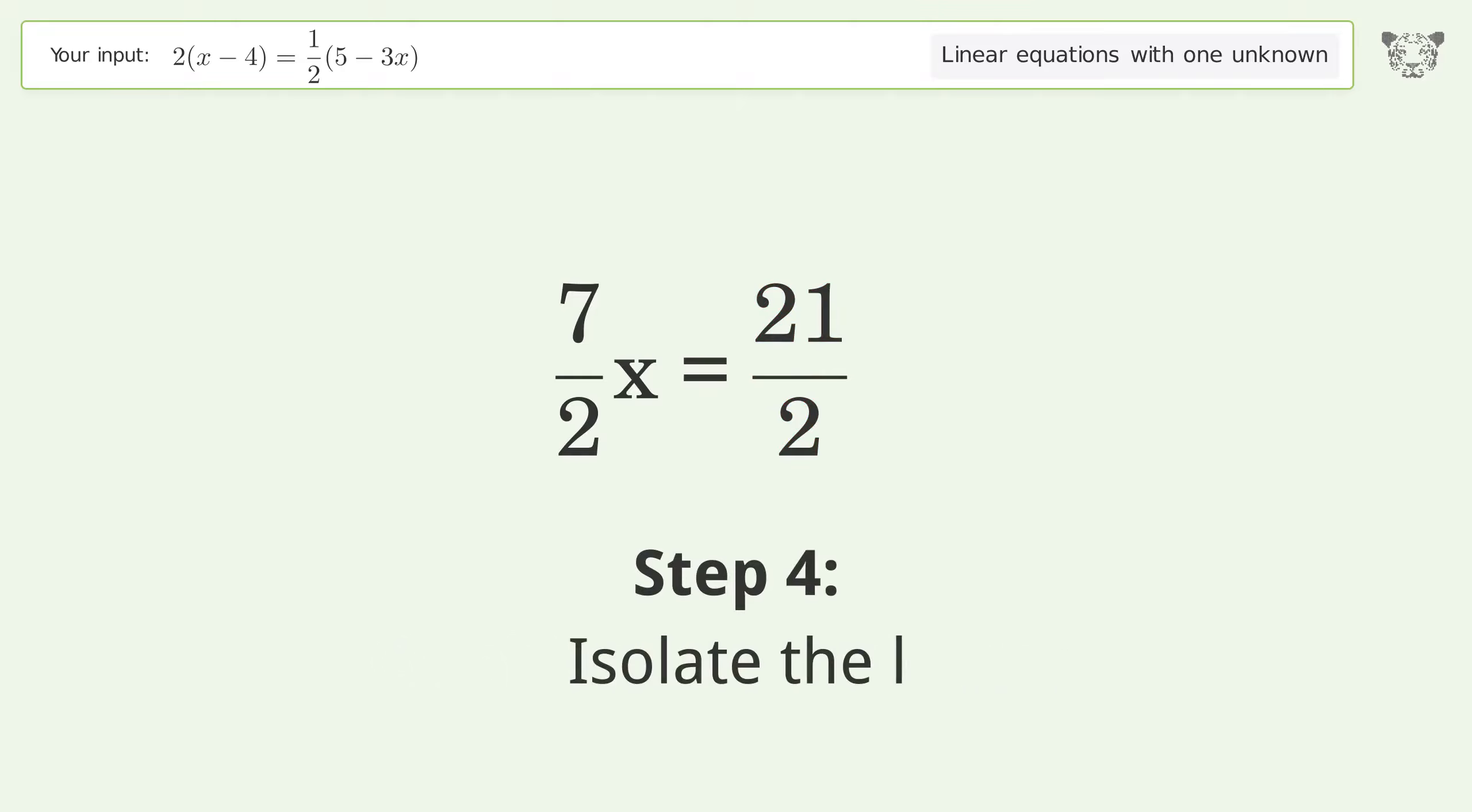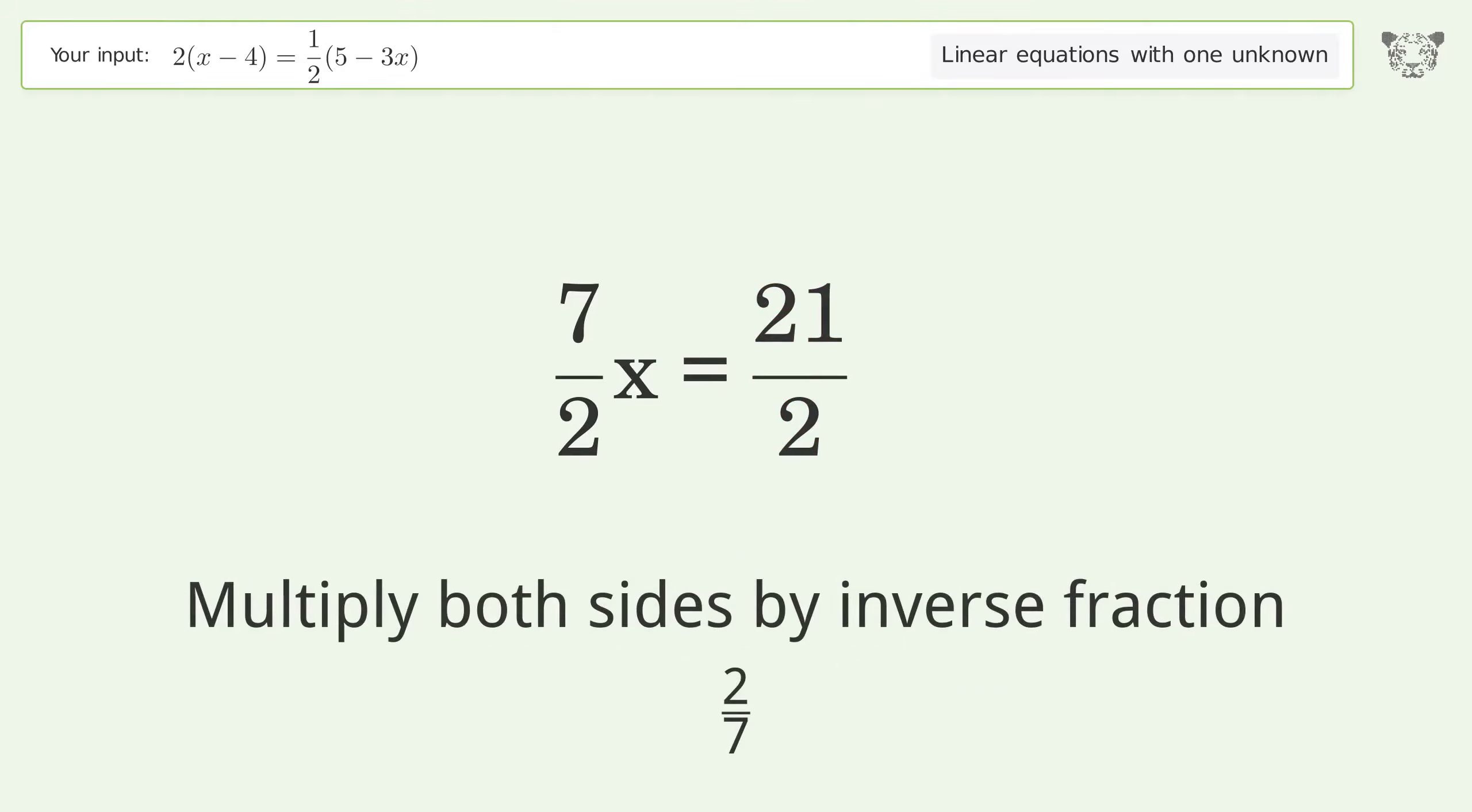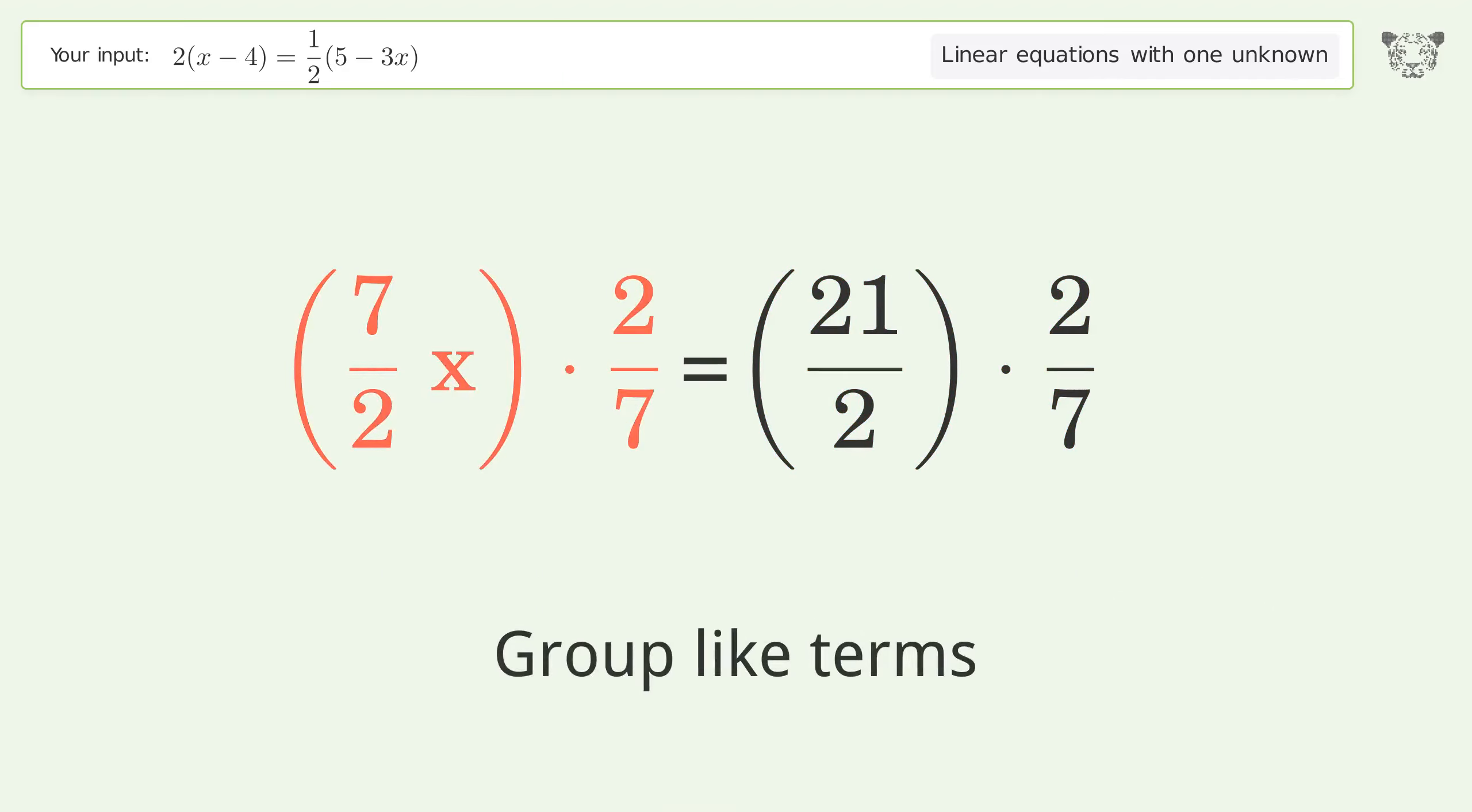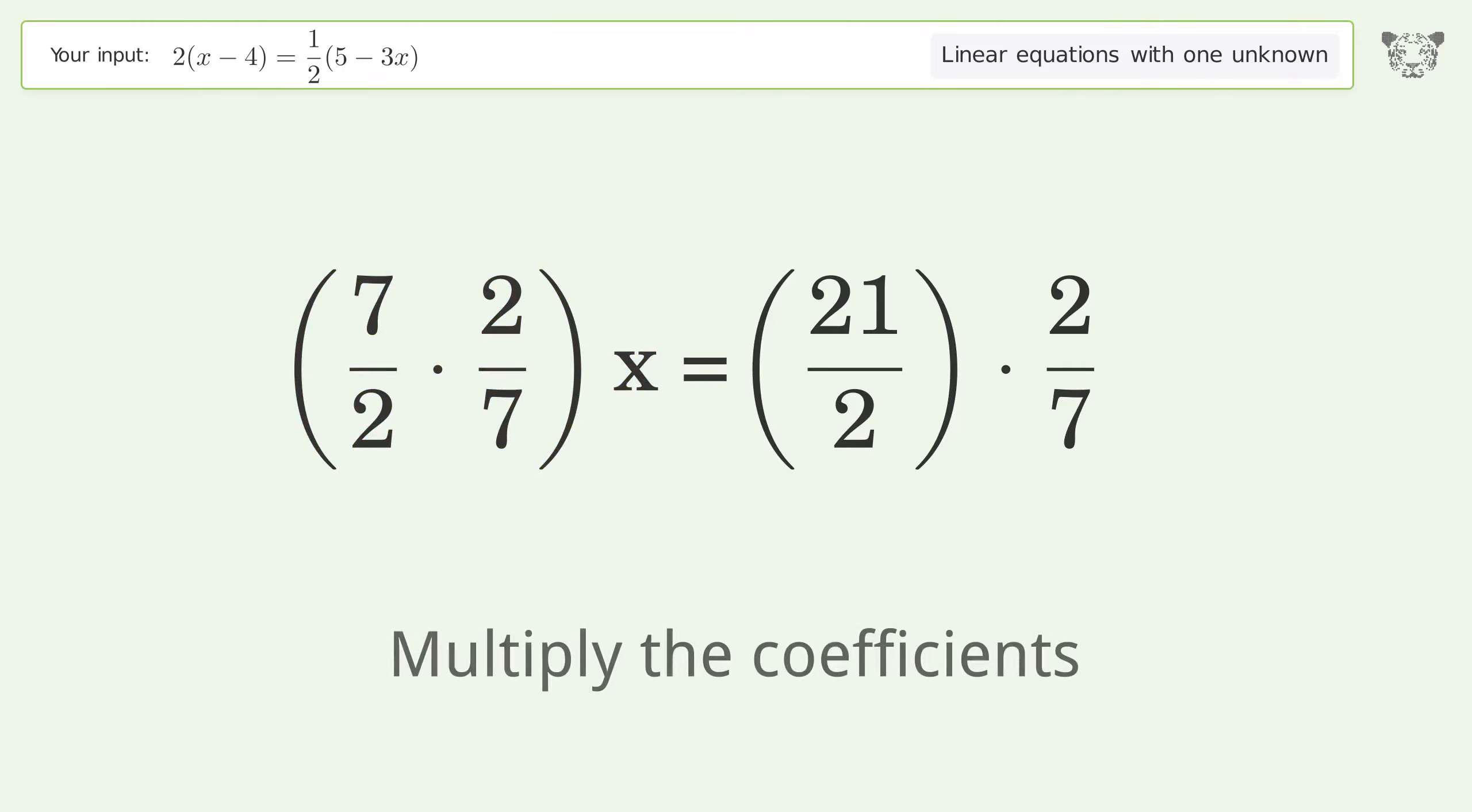Isolate the x. Multiply both sides by the inverse fraction 2 over 7. Group like terms. Multiply the coefficients.